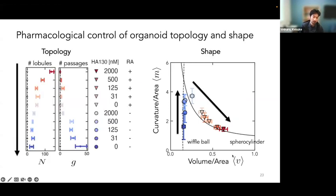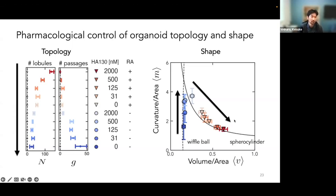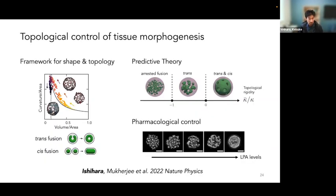Looking at the topological quantities, we can summarize all the conditions along a single axis where the topological quantities change monotonically, reconstructing a unidirectional trajectory on the shape diagram. We think this is one of the first examples where, by coming up with a framework for shape and topology, we've been able to fine-tune both the topology and shape in multicellular systems. That's the summary of this recently published work, and we hope that this way of thinking and these different ways of controlling morphology could be applicable to other tissues as well.